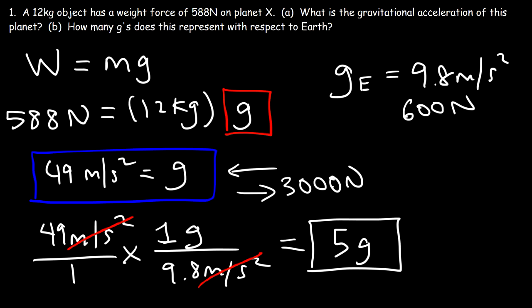So if a person weighs 200 pounds on Earth, he's going to weigh 1,000 pounds on planet X. Because planet X has a gravitational acceleration that is 5 times greater than that on Earth.